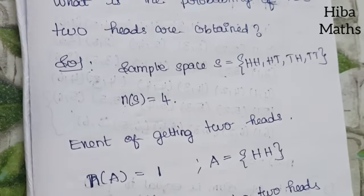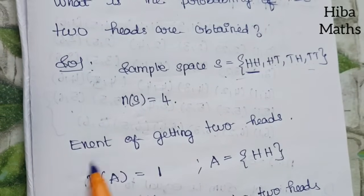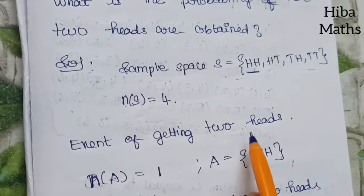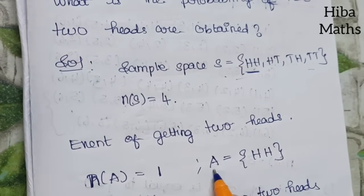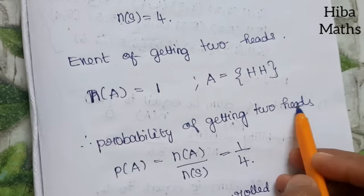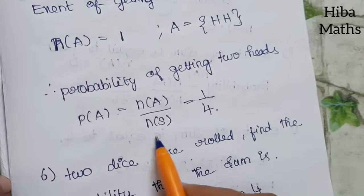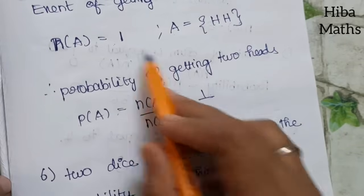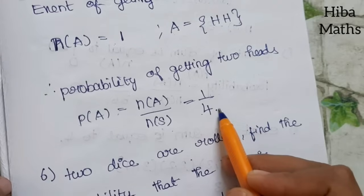The event of getting two heads: only HH satisfies this, so n of A equals 1. Probability of A equals n of A by n of S equals 1 by 4.